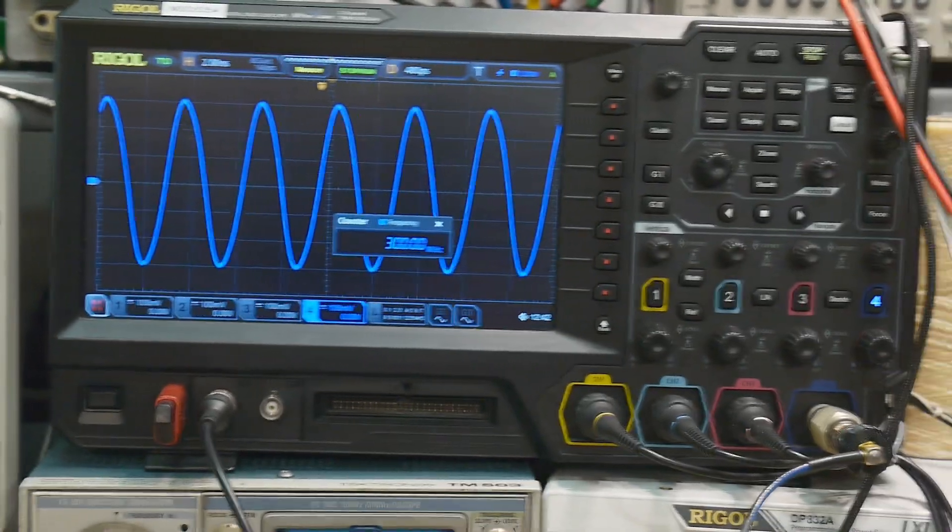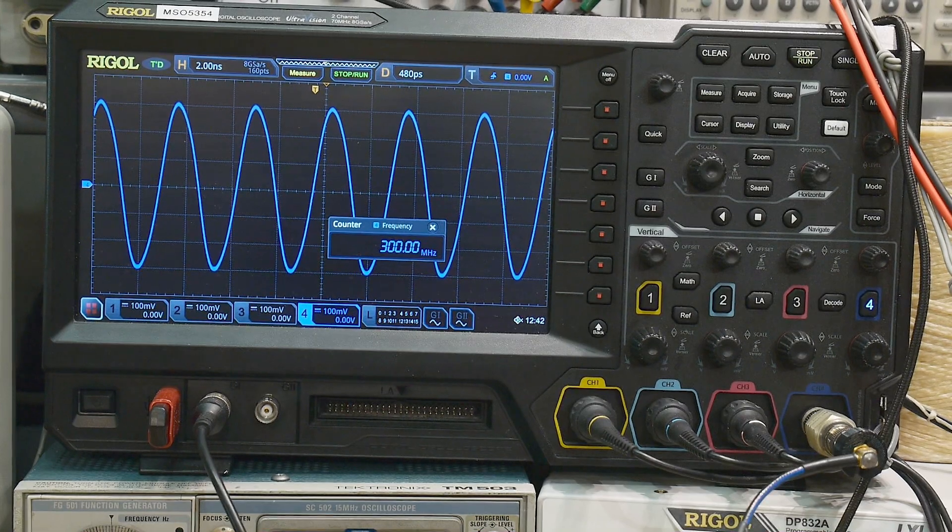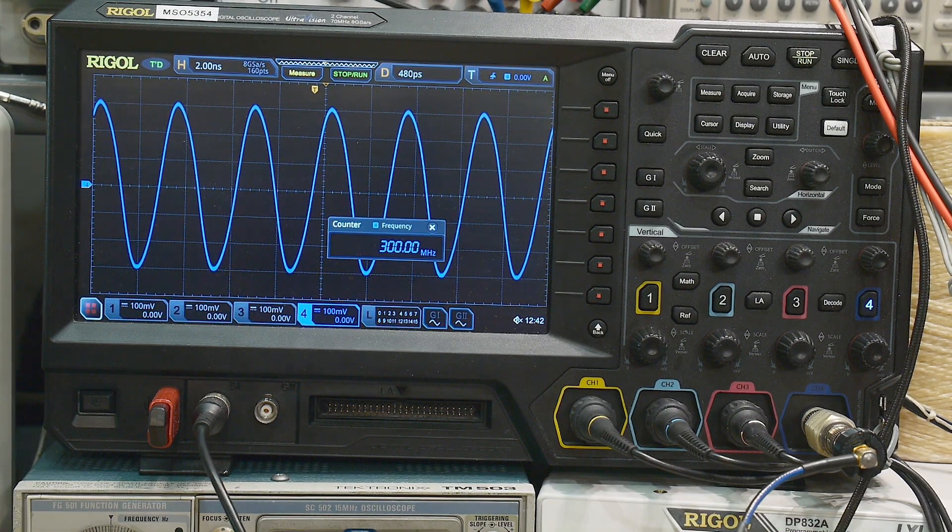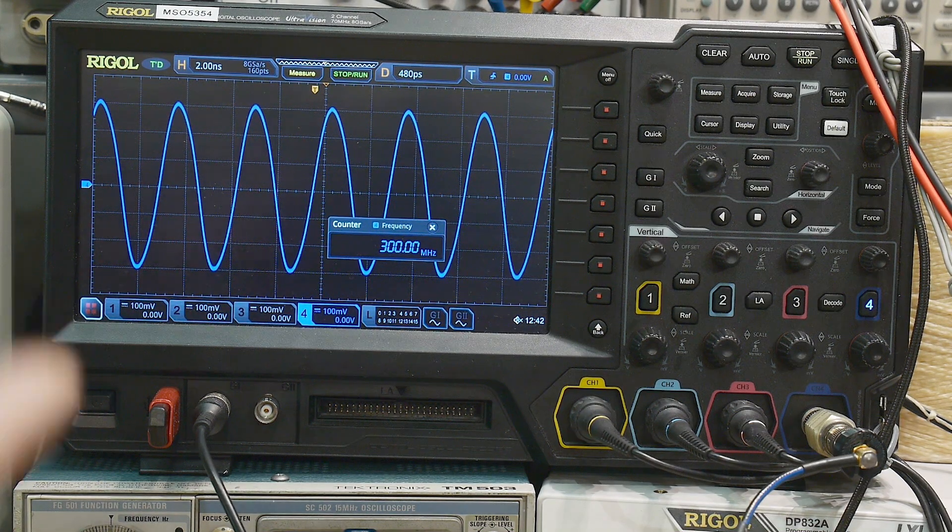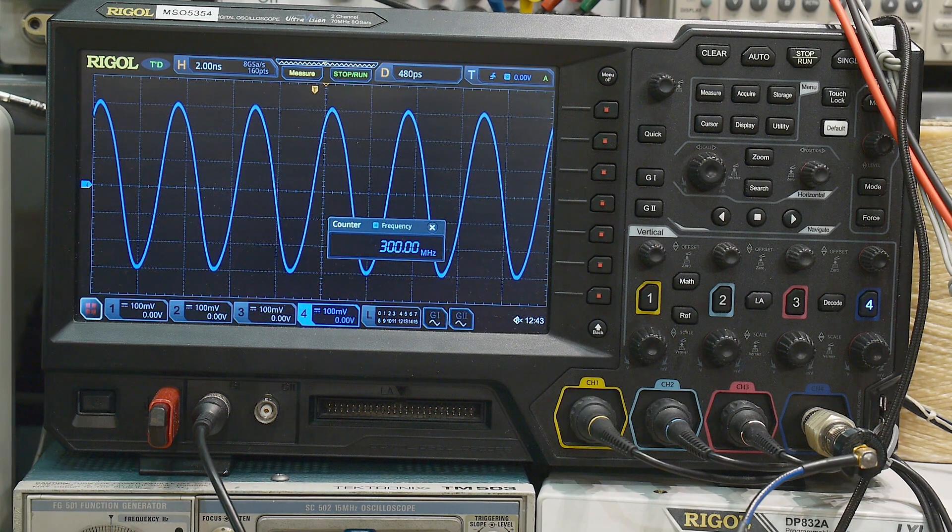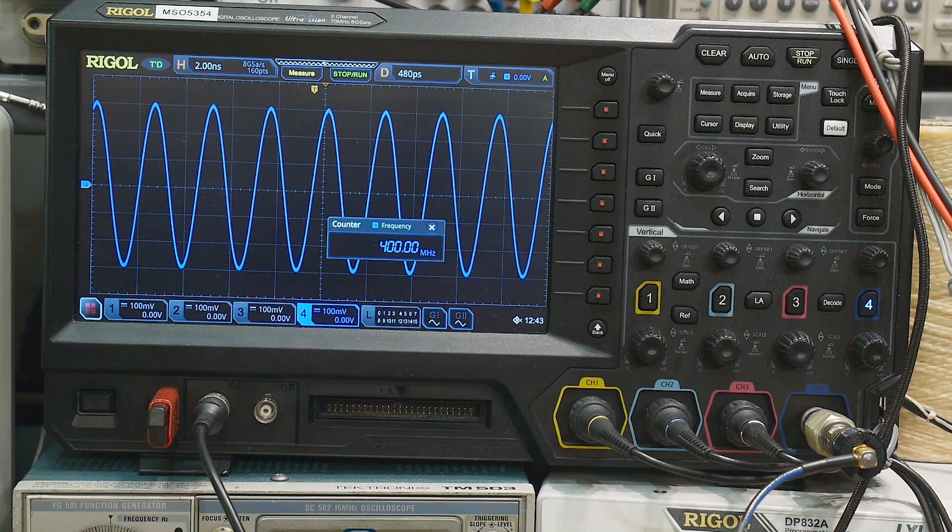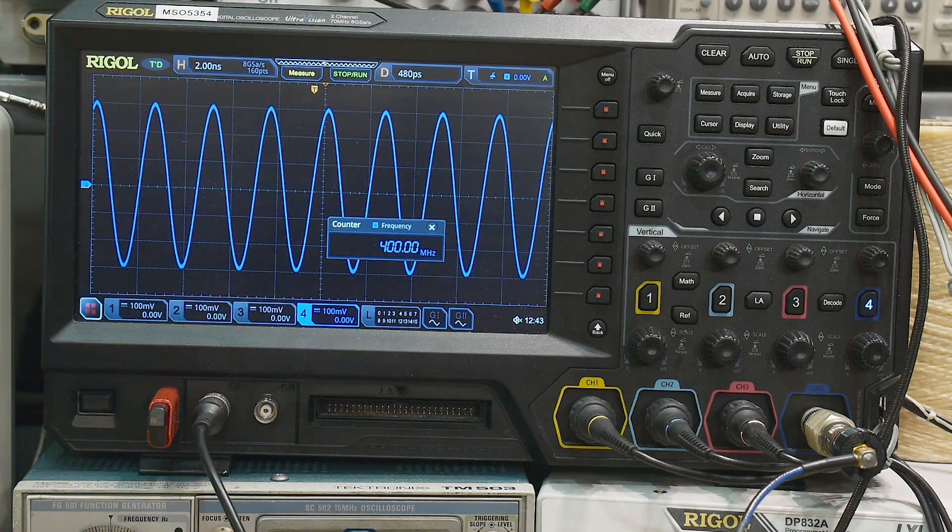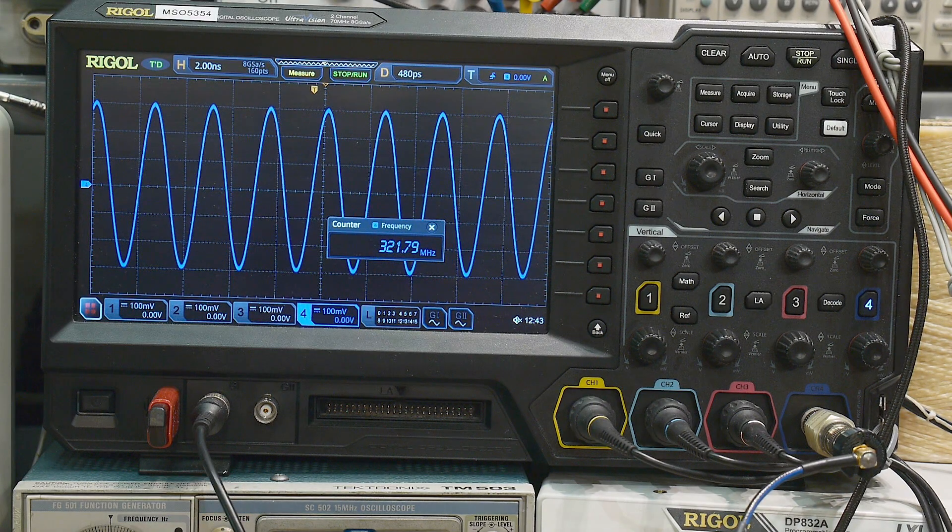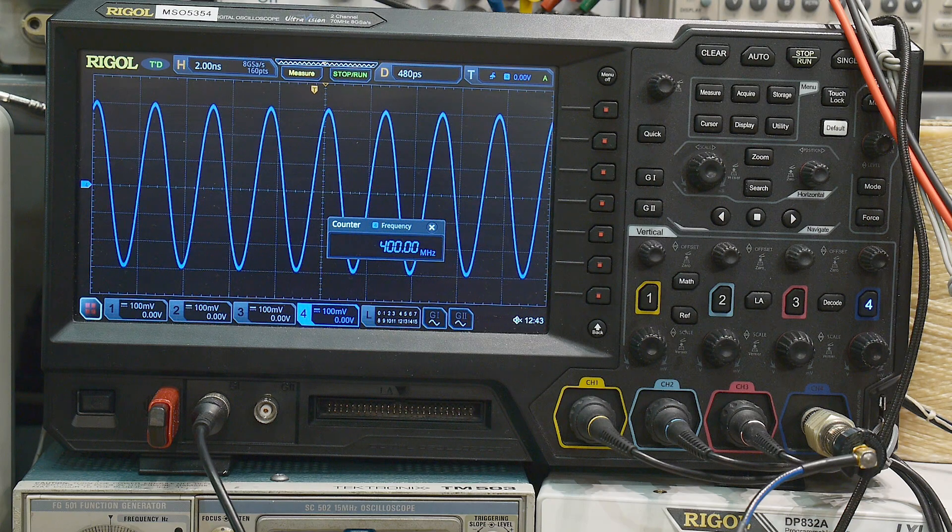So it's just the resolution bandwidth of the oscilloscope. It's going to be rounding things off, and that's to be expected. 400 megahertz, still looks fine. And the amplitude is up too. You can see the amplitude isn't changing yet. Even at 400 megahertz, the amplitude hasn't changed.